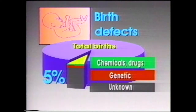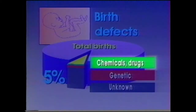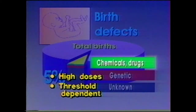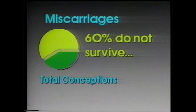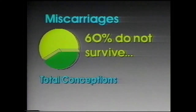It's clear from laboratory studies that defects arising from direct chemical effect require very high doses, and they are threshold-dependent. Miscarriages are even more frequent than birth defects — between 15 and 20% of known pregnancies fail, and as much as 60% of all conceptions do not survive. Much of the latter loss is apparently due to spontaneous genetic defect, resulting in embryos that are not viable.